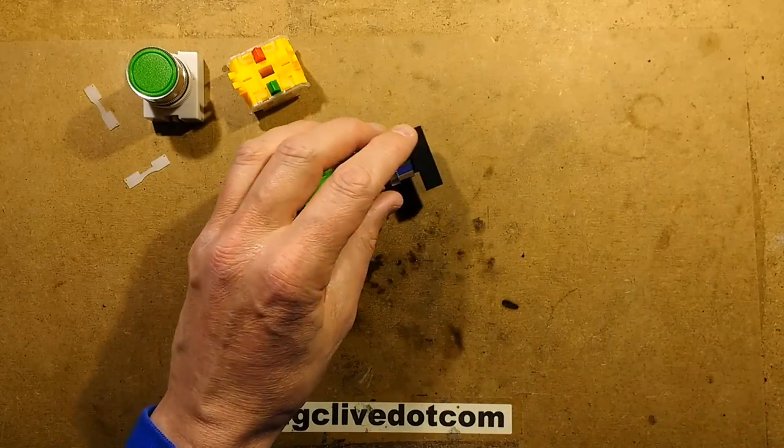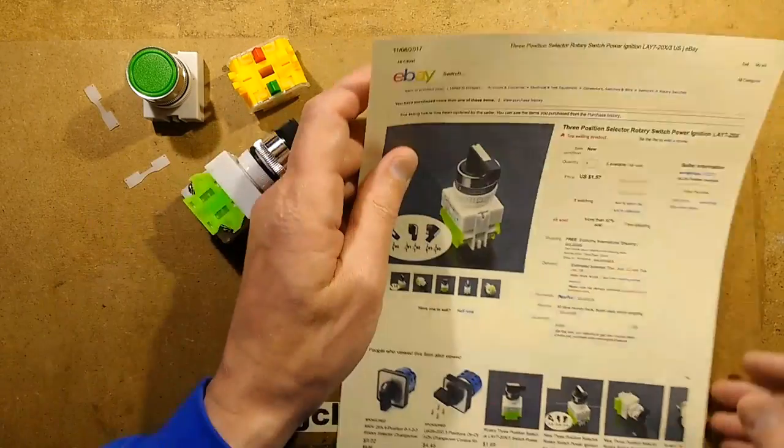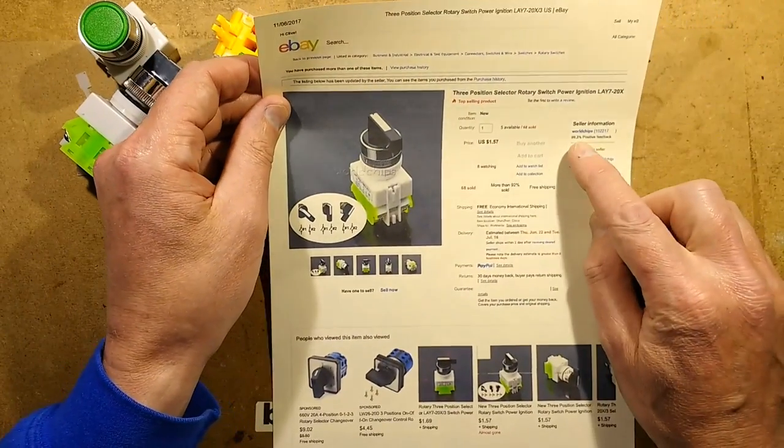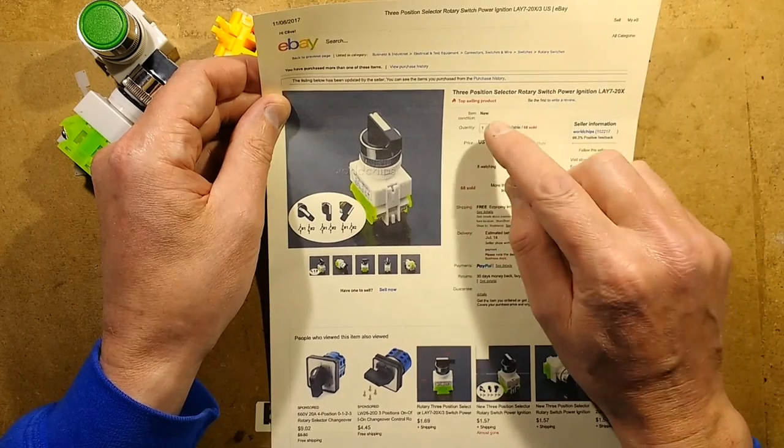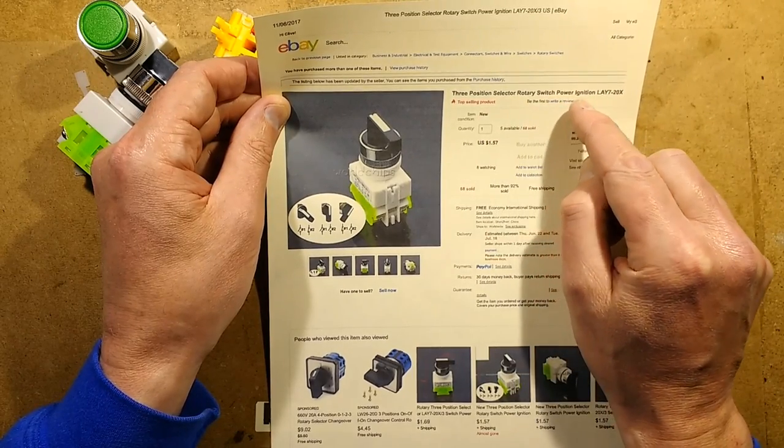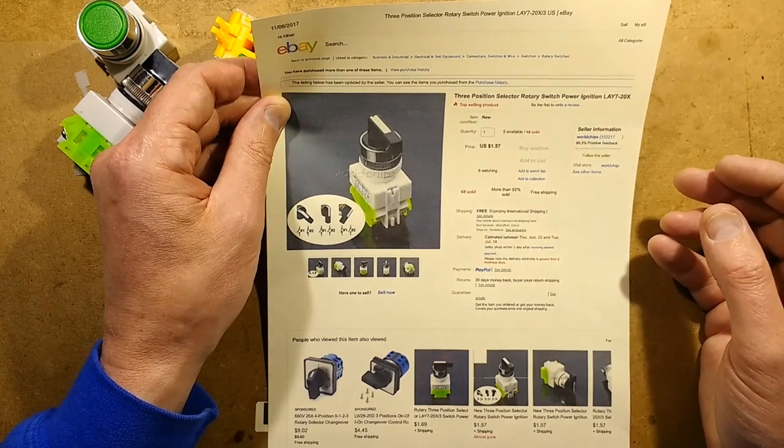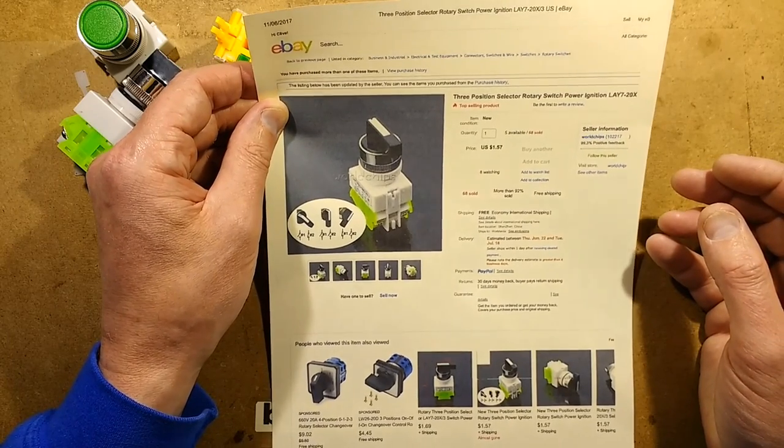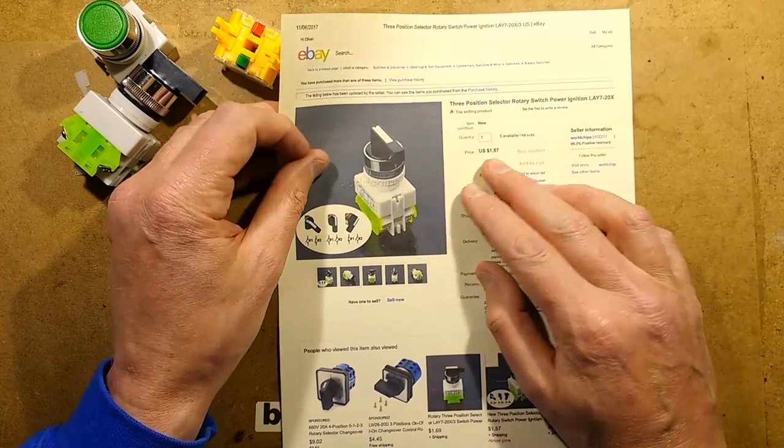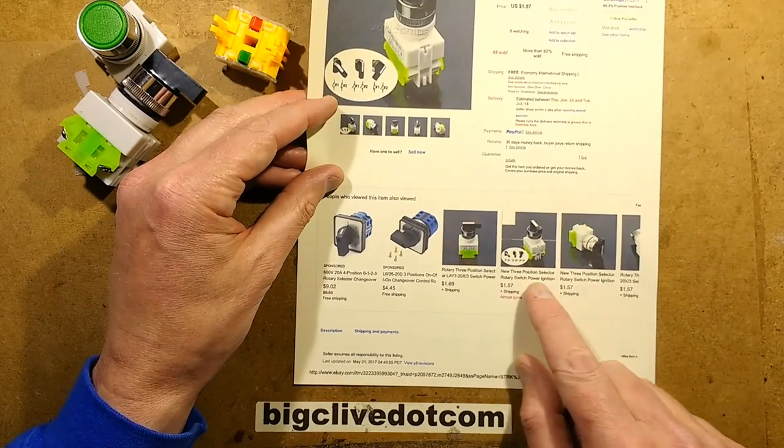So this is a very common switch. This one came from World Chips and it's described as a three-position selector rotary switch power ignition. Not sure about the ignition bit, but I suppose technically speaking you could use it to enable ignition in an industrial piece of equipment. It's only a dollar fifty-seven, and that seems to be a really common price for these.